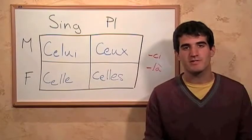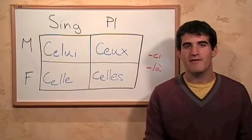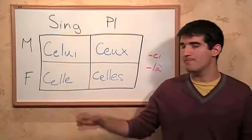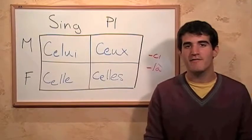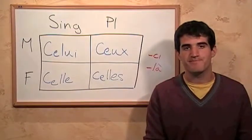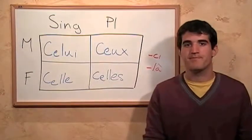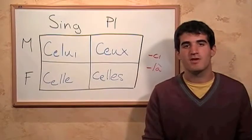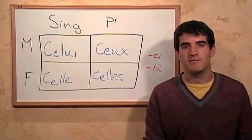So let's see how this works. For the masculine singular, we have 'celui' — this one. For the feminine singular, we have 'celle' — this one for feminine. For the masculine plural, we have 'ceux' — those ones. And for the feminine plural, we have 'celles' — those ones again.